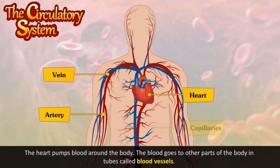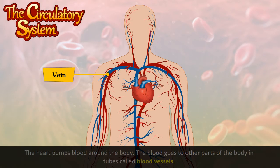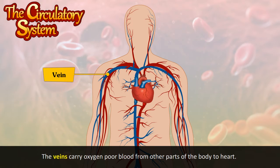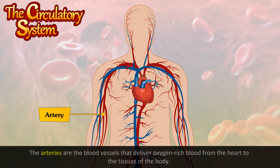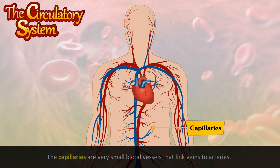Arteries, veins, and capillaries are the three types of blood vessels. The veins carry oxygen-poor blood from other parts of the body to the heart. The arteries are the blood vessels that deliver oxygen-rich blood from the heart to the tissues of the body. The capillaries are very small blood vessels that link veins to arteries.